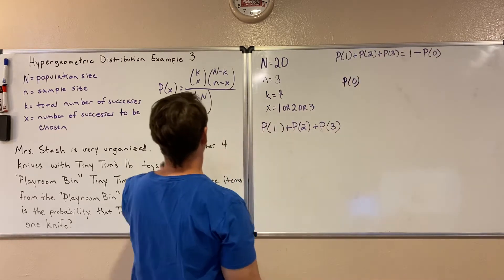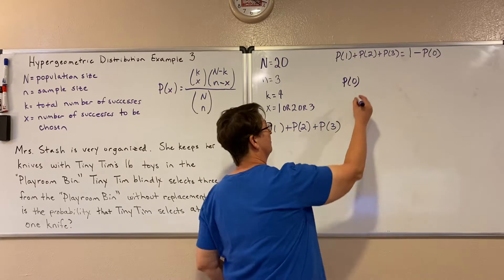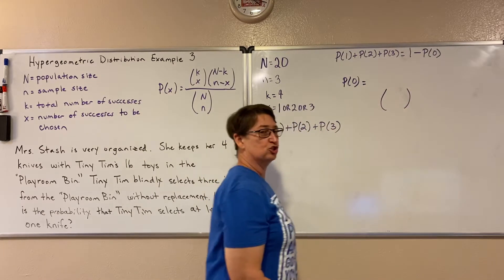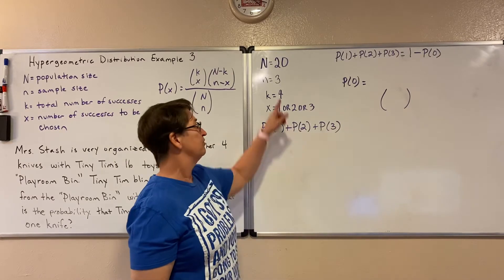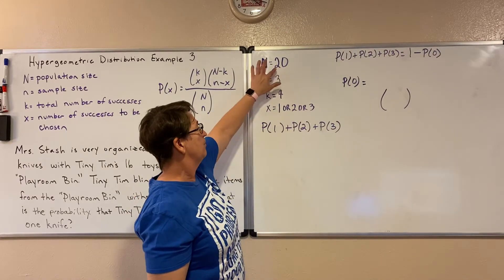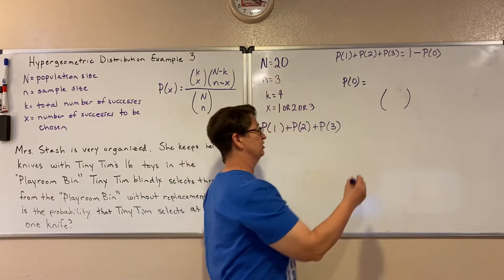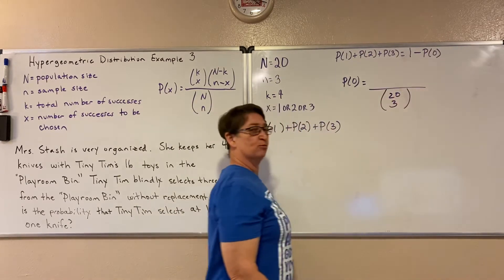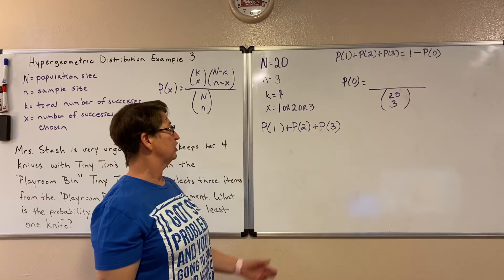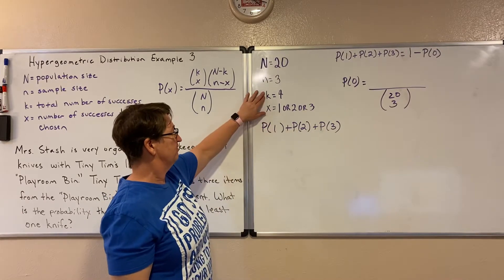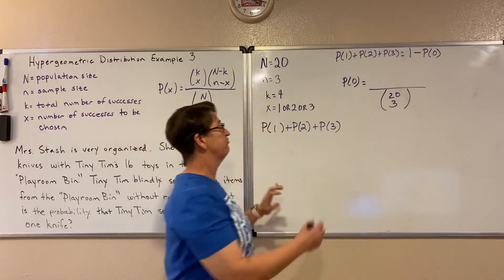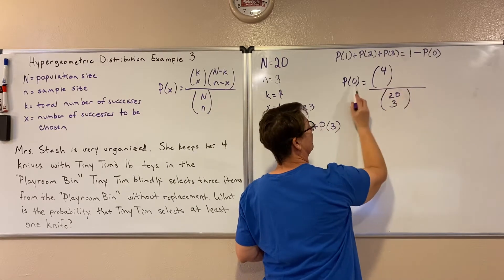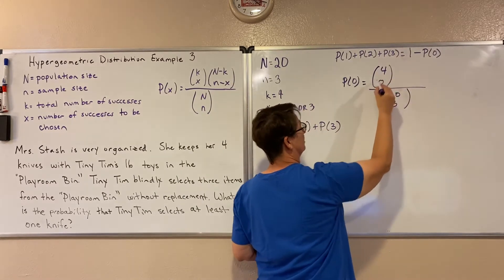So we're going to only have to find the probability of zero knives. So now I'm going to use my formula. In the denominator, I'm going to put the total number of ways that he could choose three items from his 20. He's got a population of 20 and he's choosing three. And in the numerator, we're going to put what he's looking for, the total number of successes. So he has a total number of four knives, but we're going to find that complement. So we just want zero there.